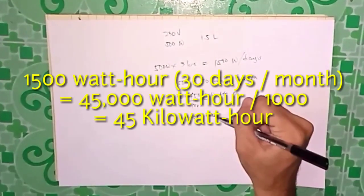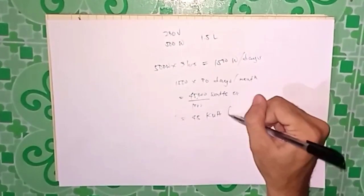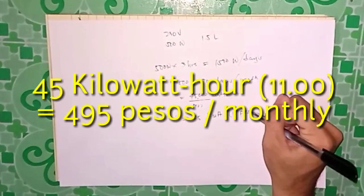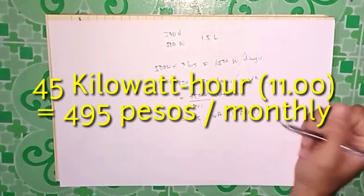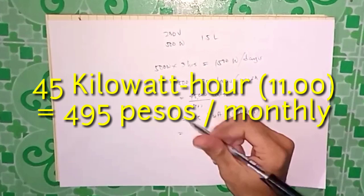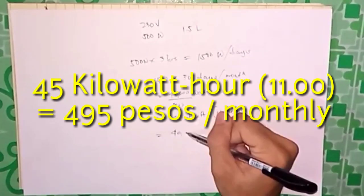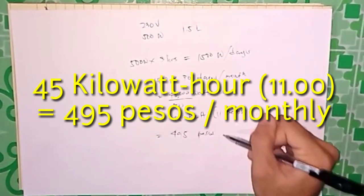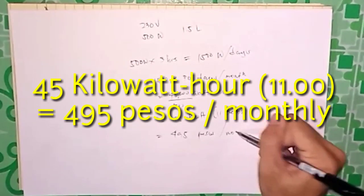Or 45 kilowatt-hour times 11 pesos equals 495 pesos per month.